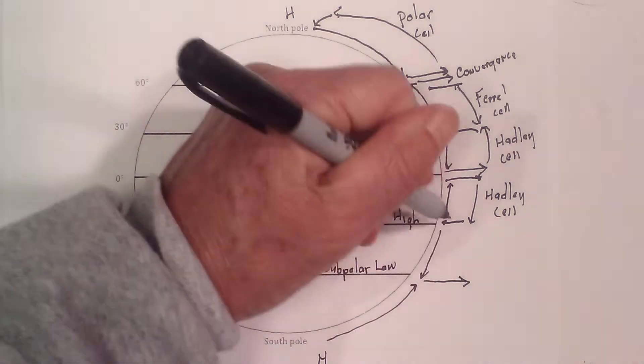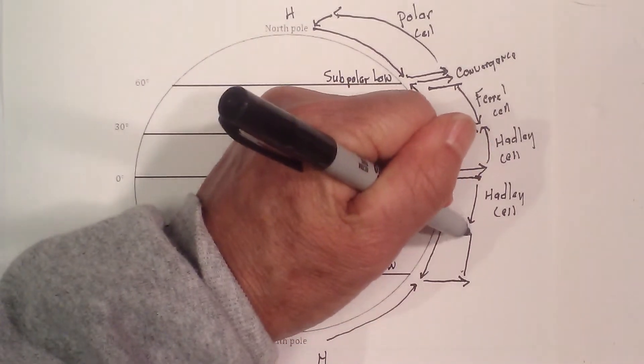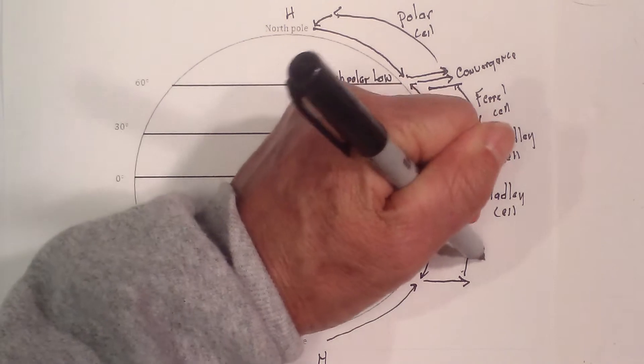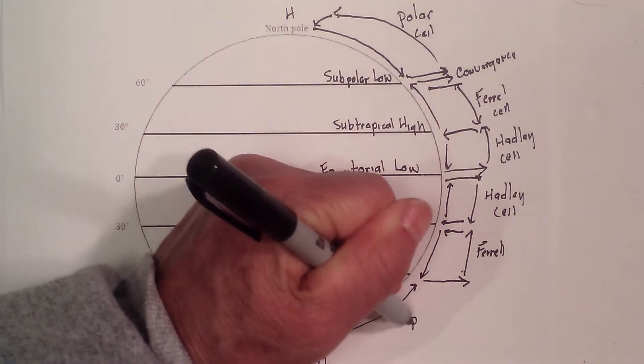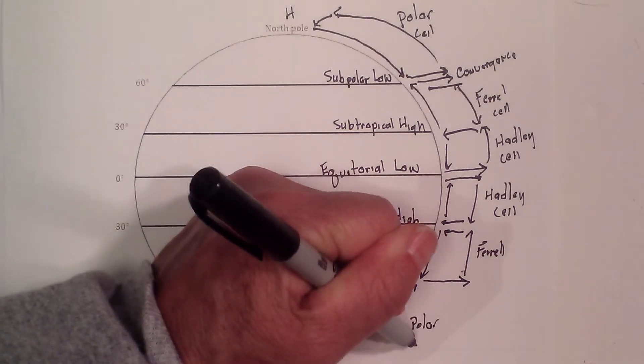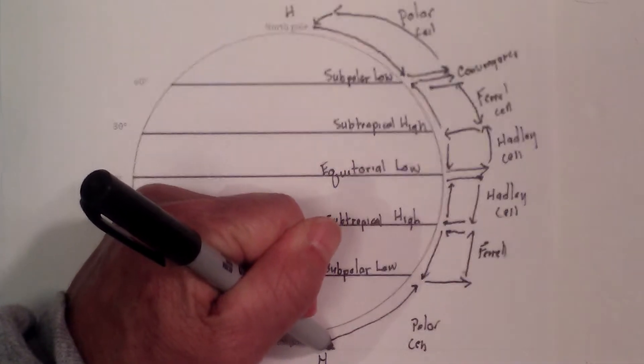Low pressure here, and then it's going to spread back out and make a cell. This is the Ferrel cell, and this is the polar cell. So now we have these cells.